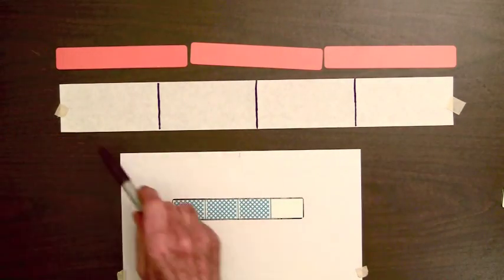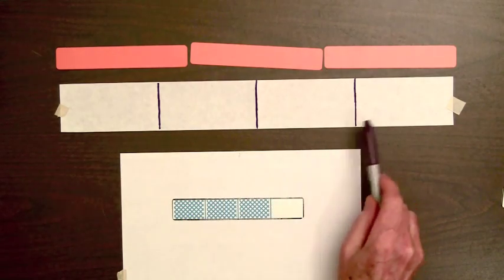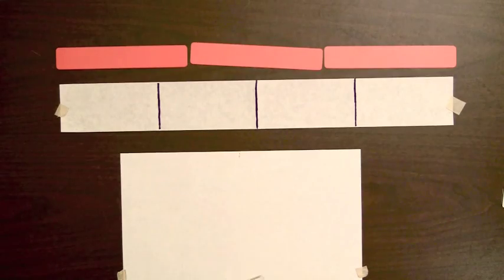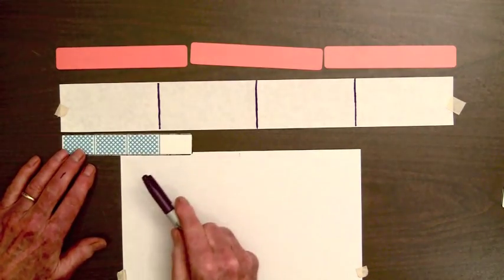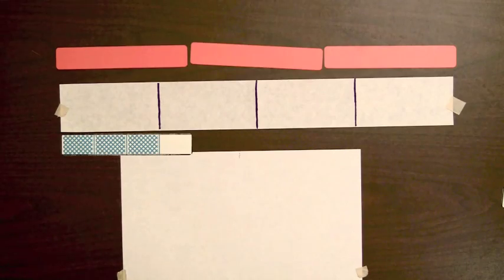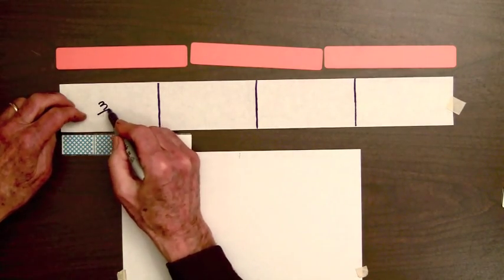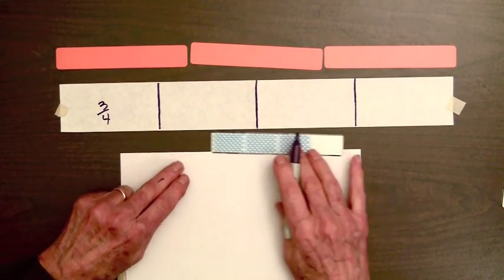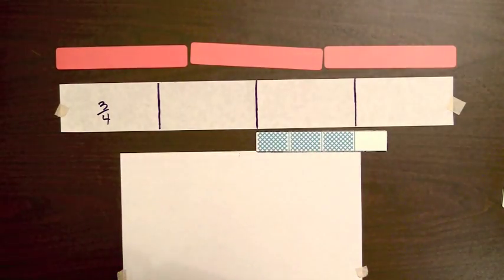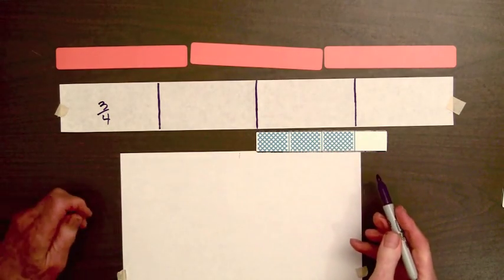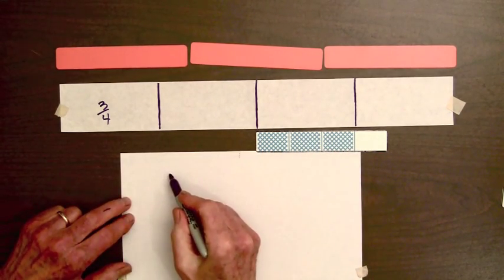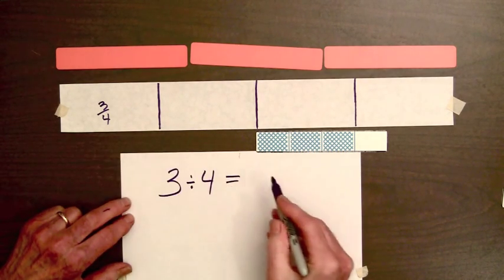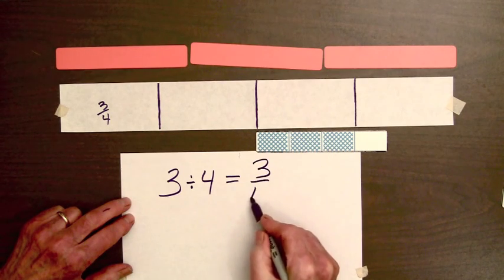Each person is going to receive this much cake. There are four people. And the question is, how much cake is this? Well, we can use the three-fourths bar to show that that's three-fourths right there. That's three-fourths of a cake. Each person is going to get three-fourths of a cake. So, we have divided three by four. Three divided by four. And we have seen that it equals three-fourths.